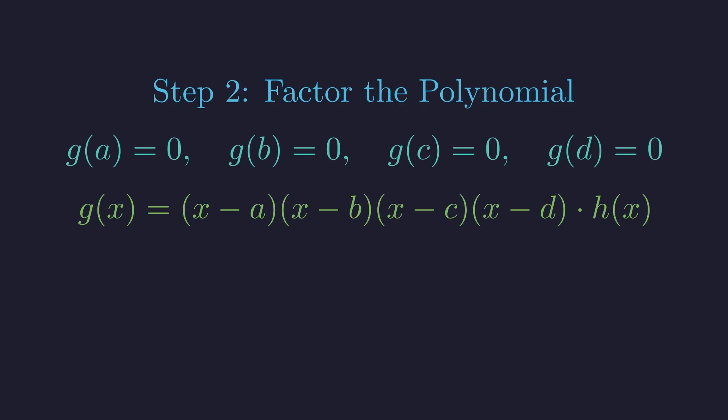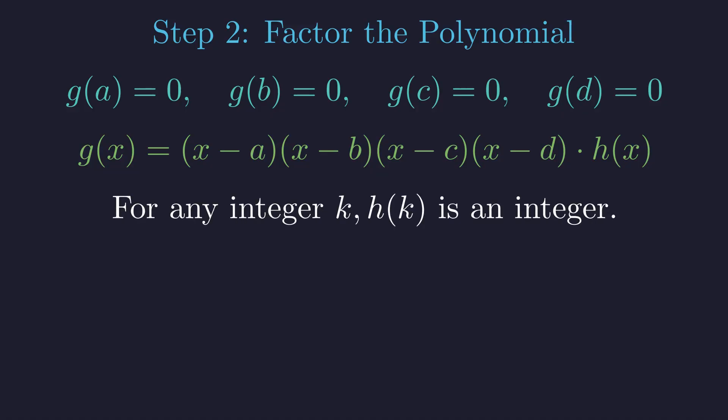Now you might wonder, what can we say about this leftover piece h of x? Well, since our original f was monic with integer coefficients, so is g. And that product of linear factors also has integer coefficients. By a classical result in algebra, this forces h to have integer coefficients too. The key takeaway is this: Whenever we plug an integer into h, we are guaranteed to get an integer back out.